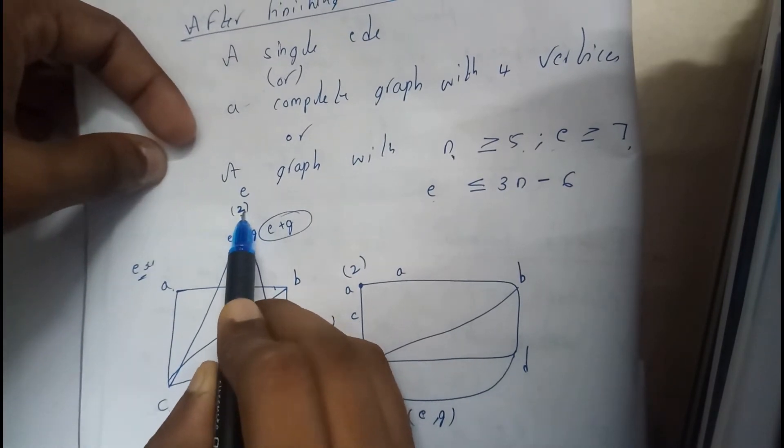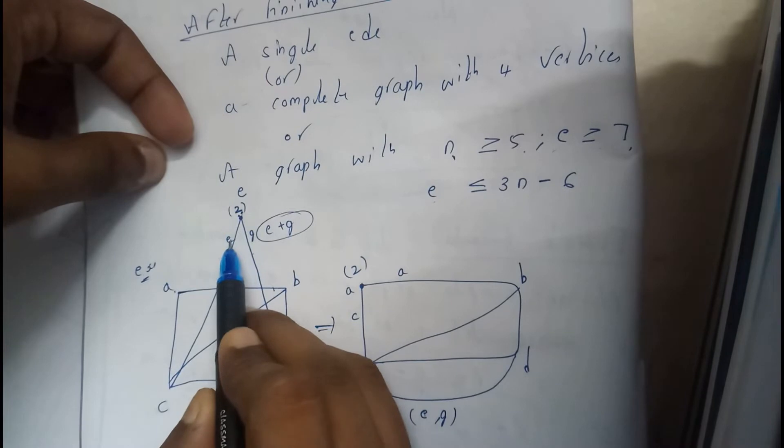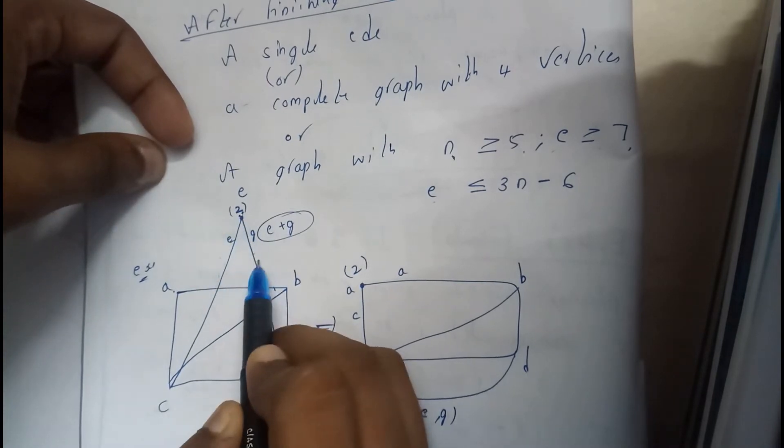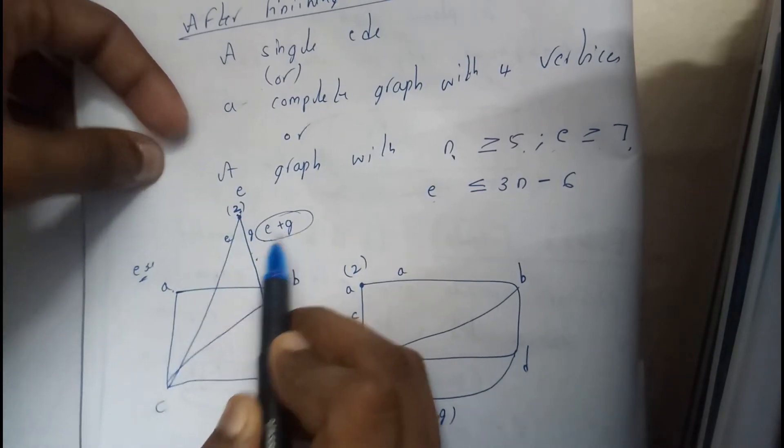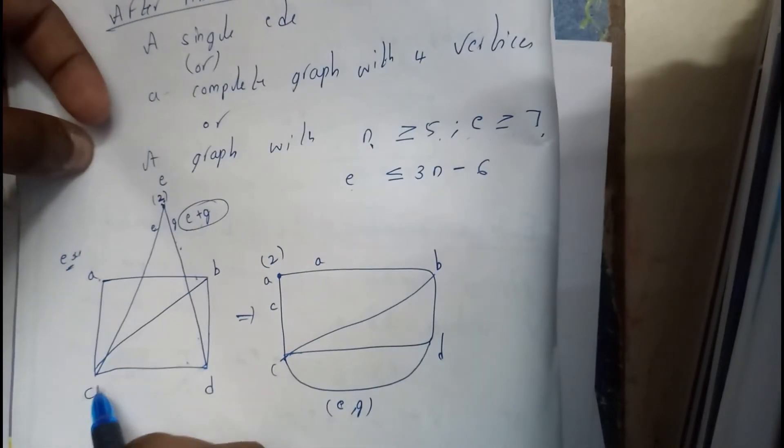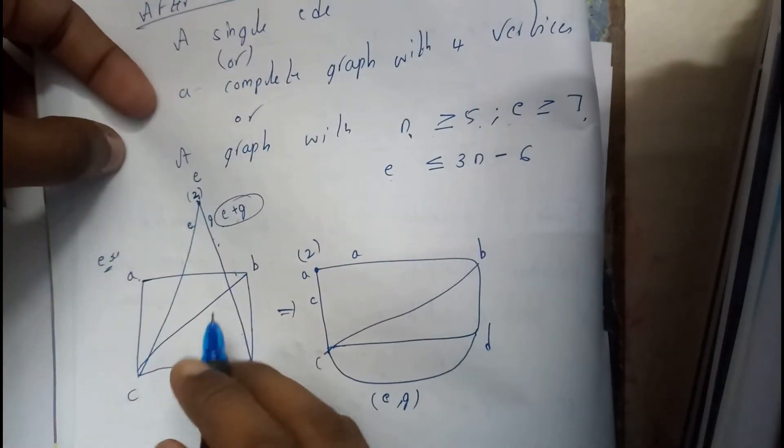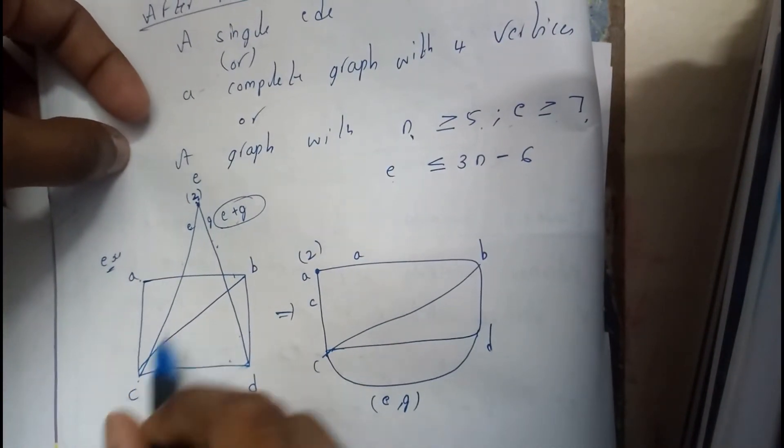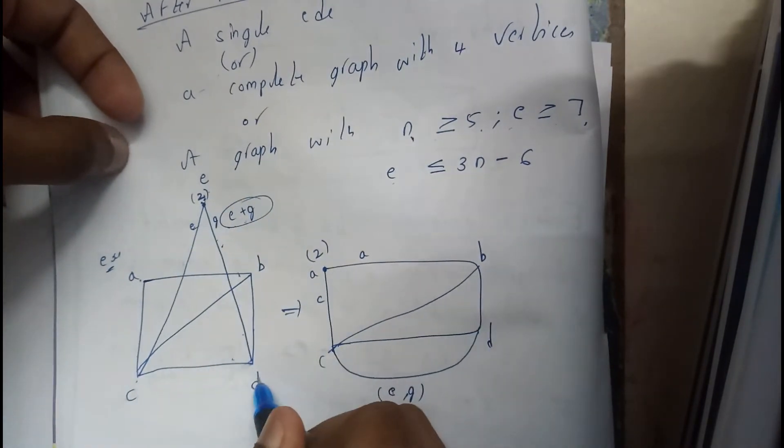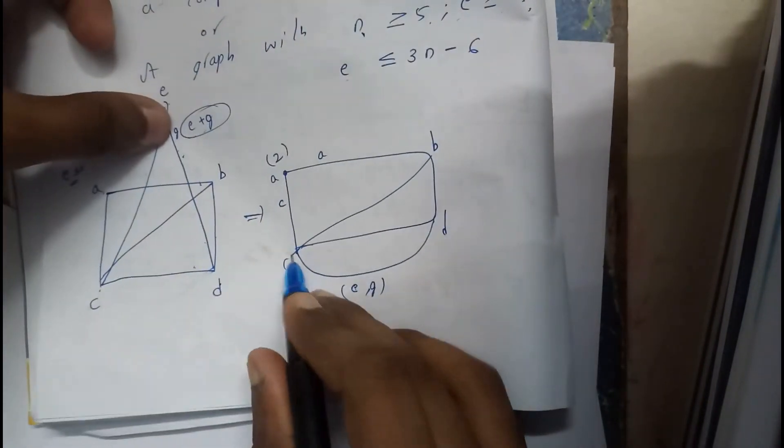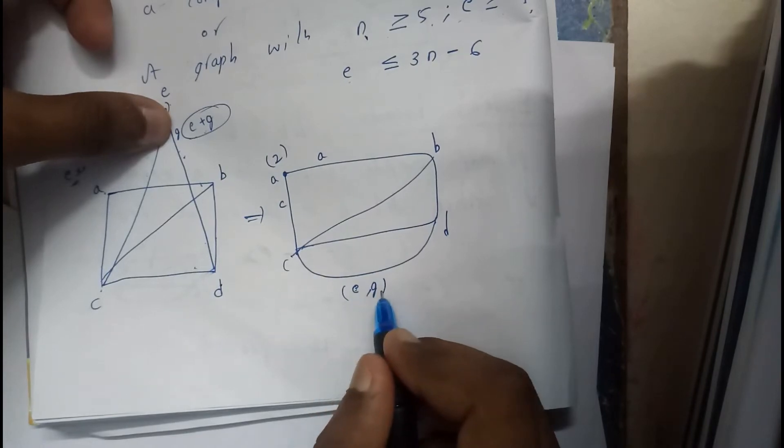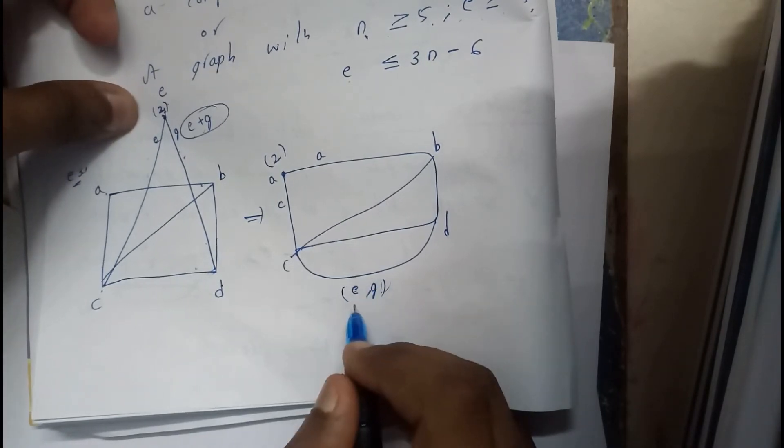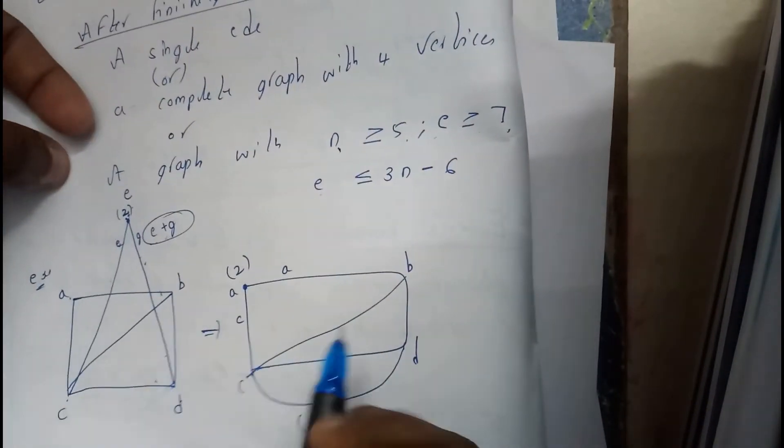This is, let us assume, edge e and edge g. So I'll be combining this e plus g. This is something like transitive condition: c to e, e to d, so I'll be directly drawing c to d, whereas e comma g will be the length.